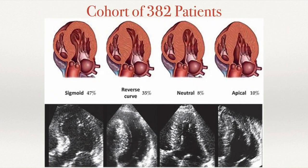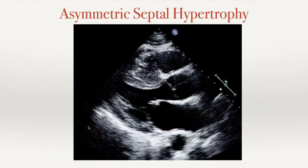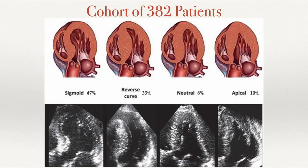The different patterns of HCM are based on a cohort of 382 patients. The most common type is the sigmoid pattern, with hypertrophy in the basal septum, present in about 47% of patients. Then you have the reverse curve pattern. There's also the neutral type with concentric hypertrophy, less common at only 8% of patients. Finally, apical HCM can be difficult to identify, which is why addition of echo contrast is usually recommended to better characterize it when apical HCM is suspected.